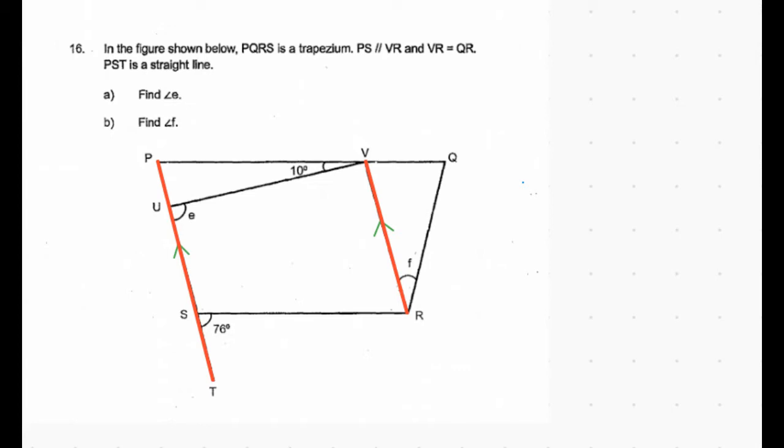Line PS is given to be parallel to VR, so let's mark that. Now consider the trapezium PQRS. Line PQ is parallel to SR, so let's mark that as well.